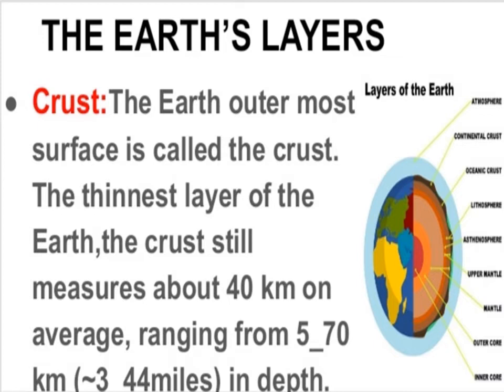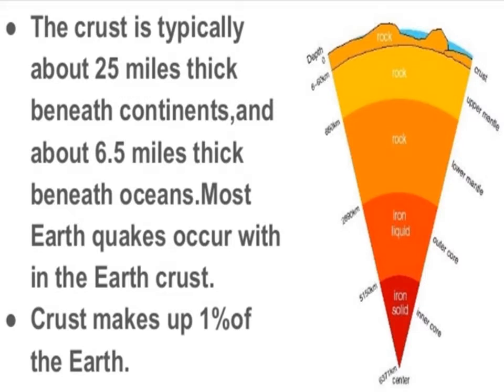The crust ranges from 5 to 70 kilometers, or 3 to 44 miles, in depth. As shown in this diagram, there are different layers of the Earth. The crust is typically about 25 miles thick beneath continents and about 6.5 miles thick beneath oceans.